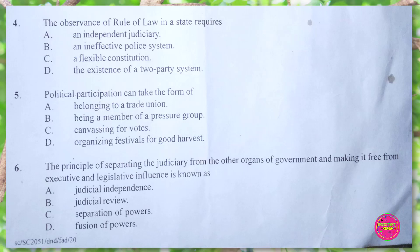Question 6. The principle of separating the judiciary from the other organs of government and making it free from executive and legislative influence is known as: A. judicial independence, B. judicial review, C. separation of powers, D. fusion of powers. The correct answer is C. separation of powers.